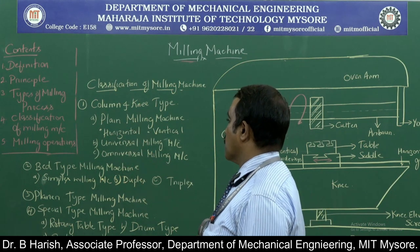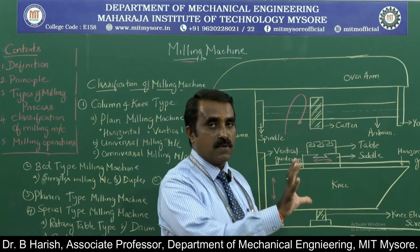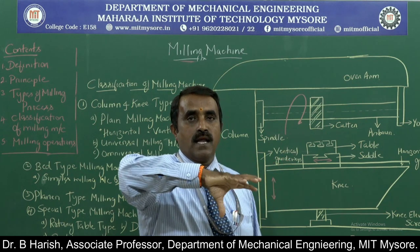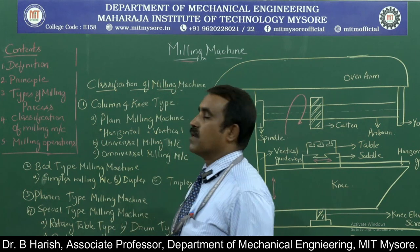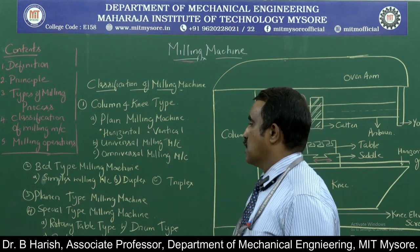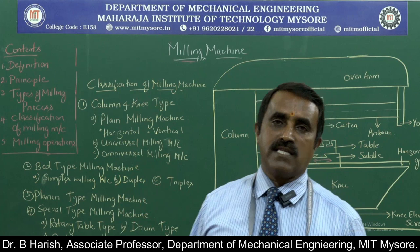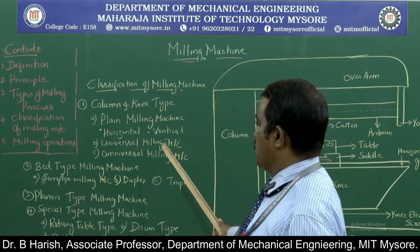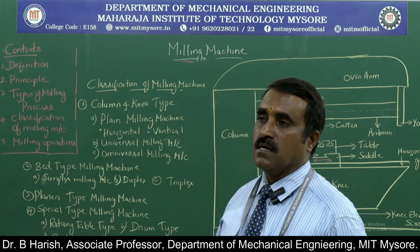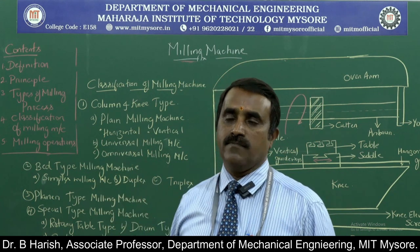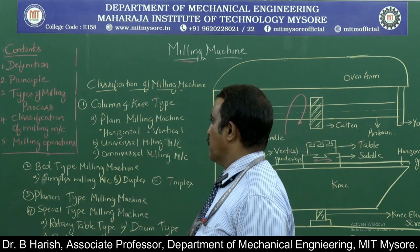Under column and knee type, there is also the omniversal milling machine, where the table can be swiveled about the knee axis — not just 45 degrees but about the knee. If only 45 degrees it is universal; if it can be swiveled about the knee, it is called omniversal milling machine. Classification: horizontal and vertical under plain milling based on spindle axis direction; universal where table tilts 45 degrees; omniversal where table can swivel about the axis.